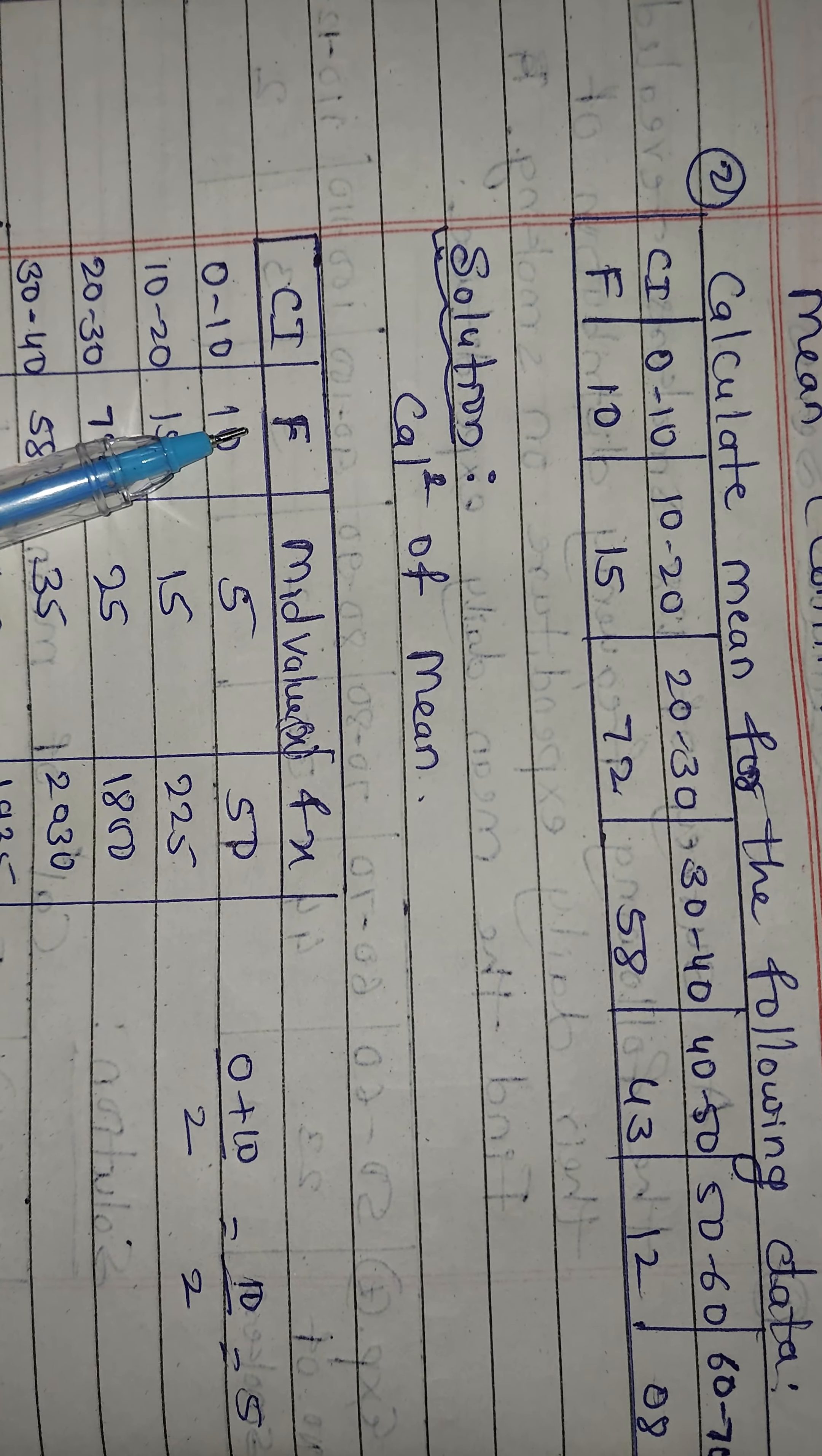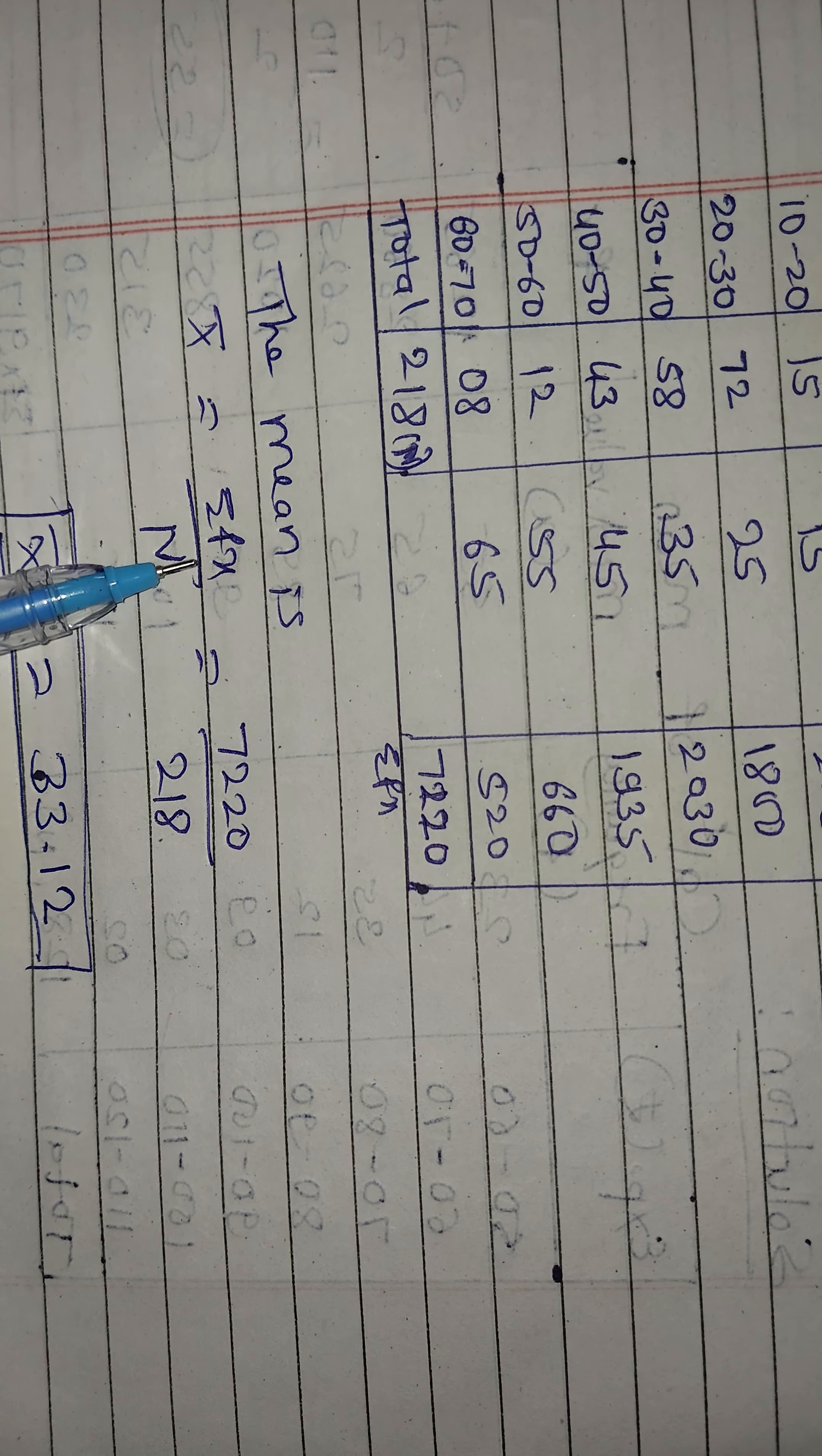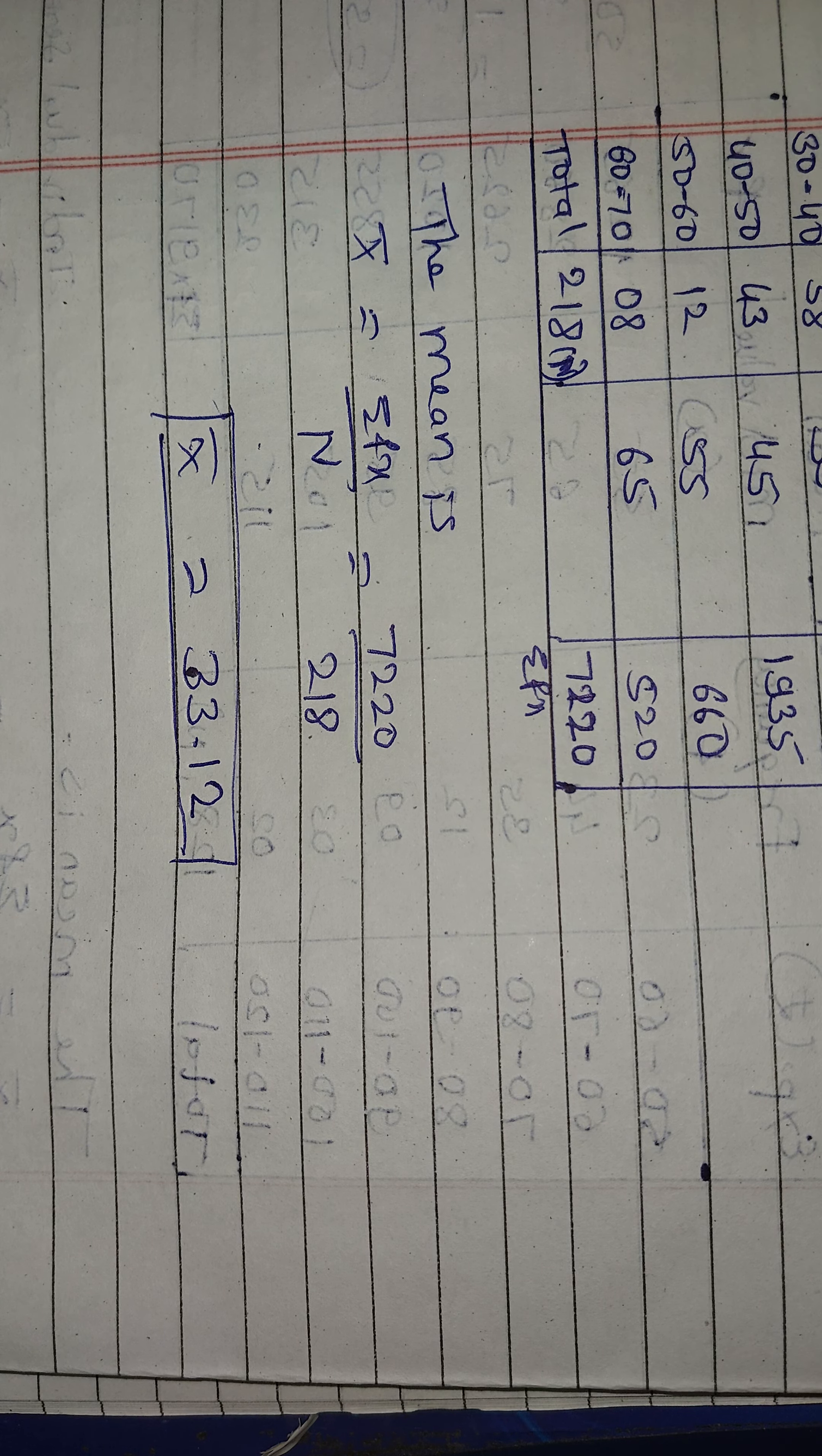CI, F already in question. Middle value, multiply, total - summation FX value. x̄ = ΣFX / N, we get the mean value. Thank you so much for watching this video.